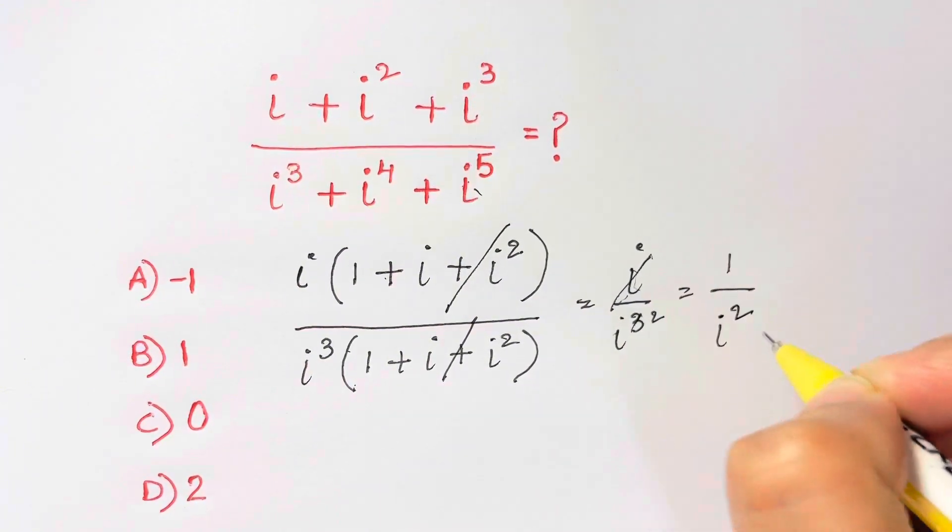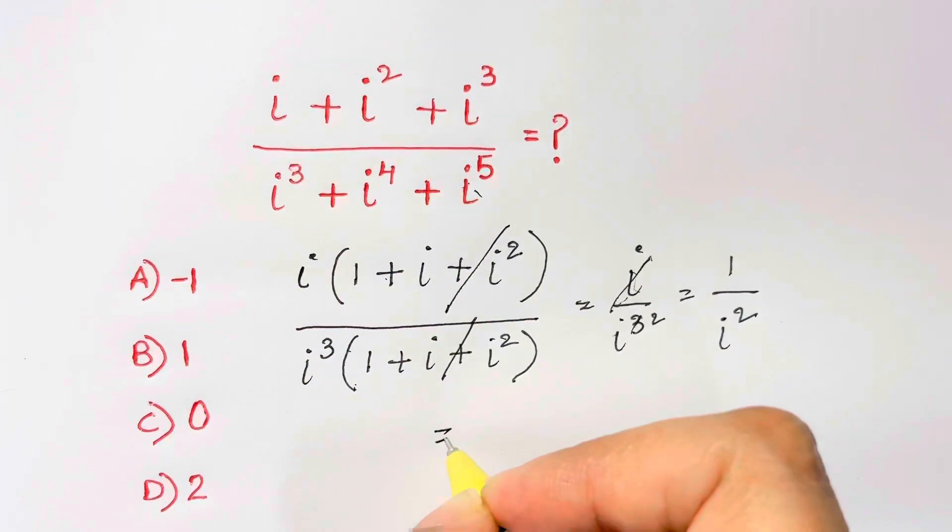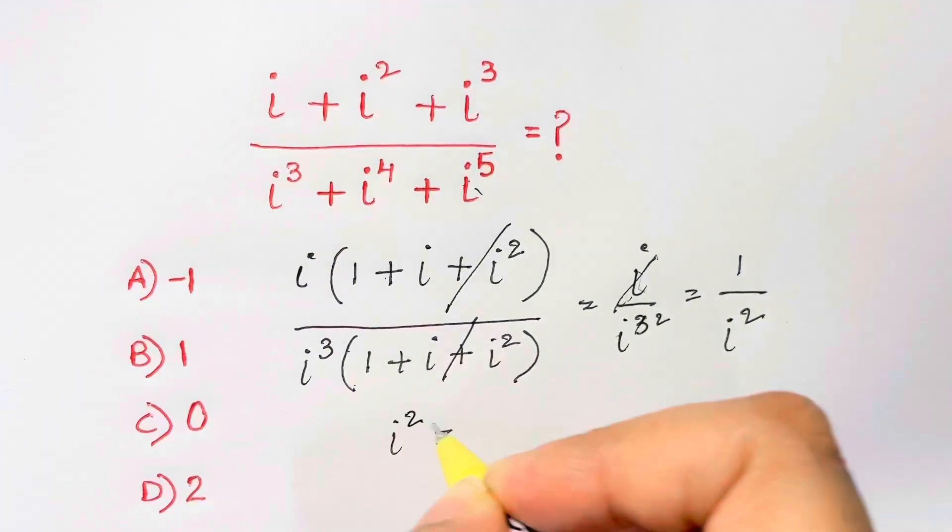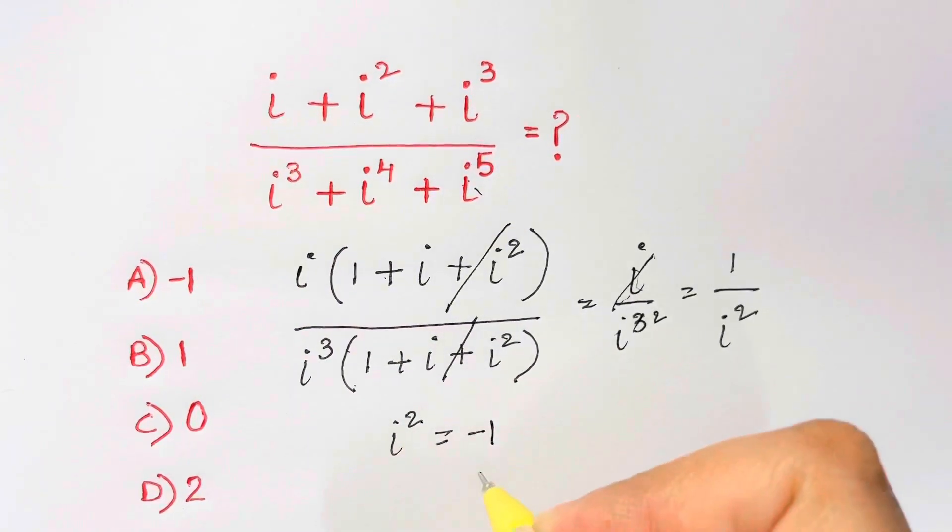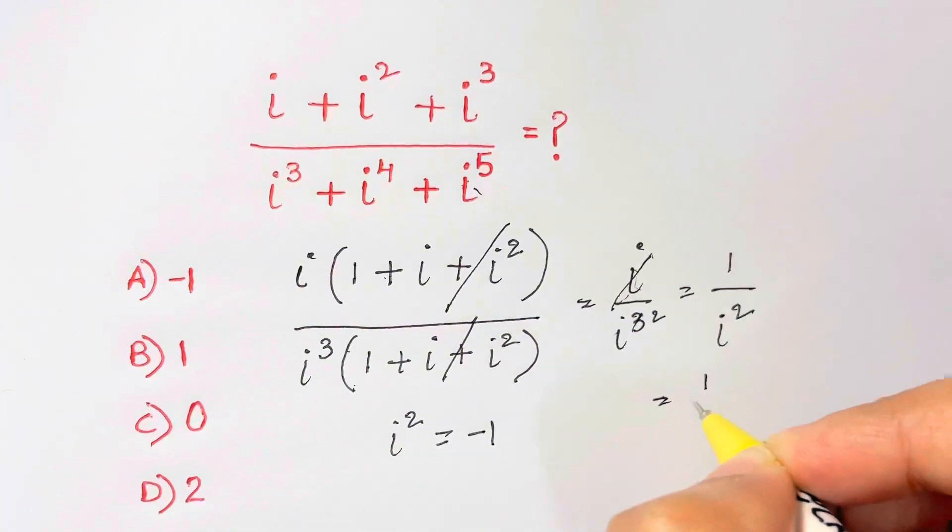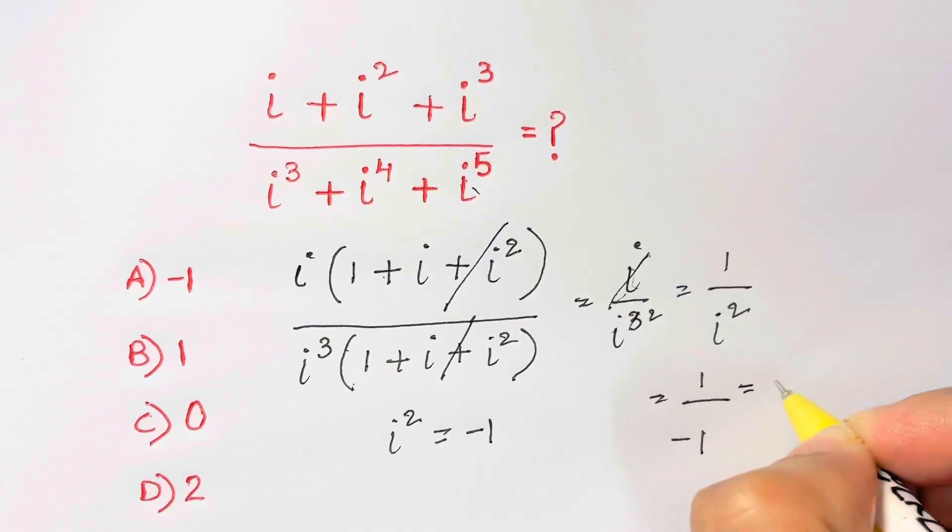So 1 over i squared and i squared is what? You know that it's negative 1. So let's substitute it back. 1 over negative 1 and that's equal to negative 1.